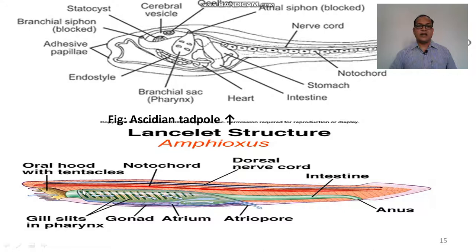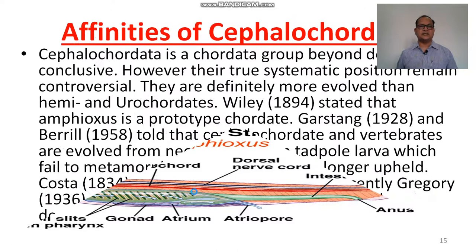These are the lancelet structures — the ascidian tadpole and Amphioxus — which are similar in structure to some extent.